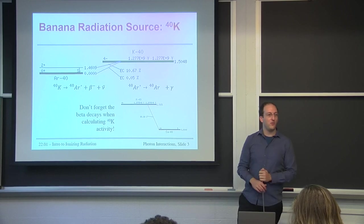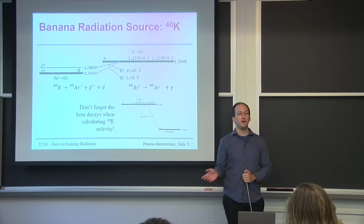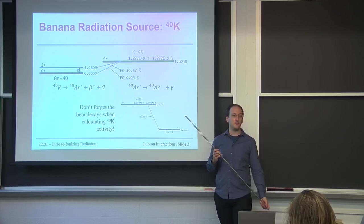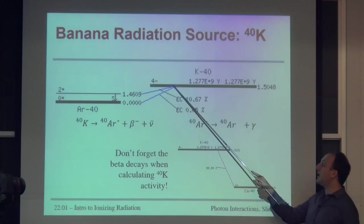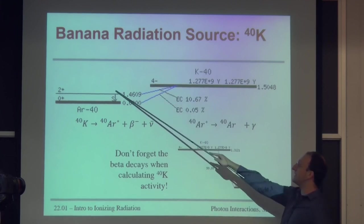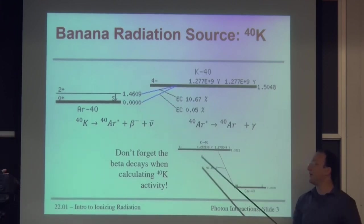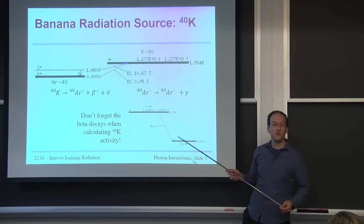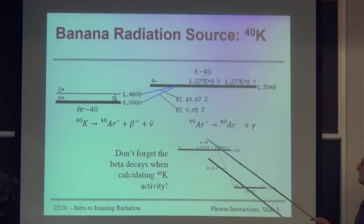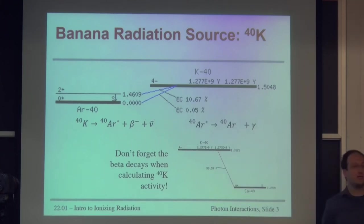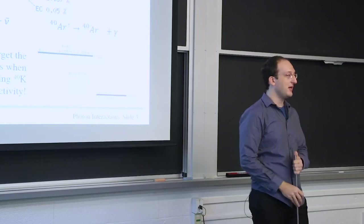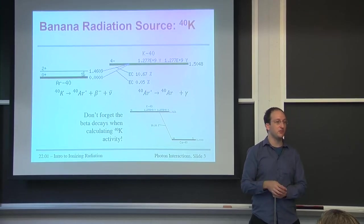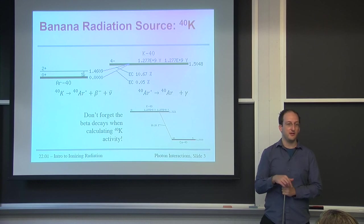Let's first figure out where this radiation is coming from. This is the link between the first part of the course and what we're going to be doing over the next month. As we've seen from the decay diagrams, potassium-40 can undergo electron capture or positron release. If it undergoes electron capture, it gives off a 1.461 MeV gamma ray as the only possible transition. It also undergoes beta decay. Today we're focusing on what this gamma ray actually does when it encounters matter.